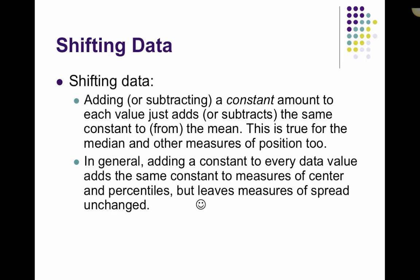Measures of position include the minimum or maximum values, your quartiles, any of those. So when you put the numbers in order and add a constant to everything, everything shifts in the same way. So if your mean was 10 and you're adding 5 to every value, your mean is now 15. What shifting data does not do is have any effect on a measure of spread.